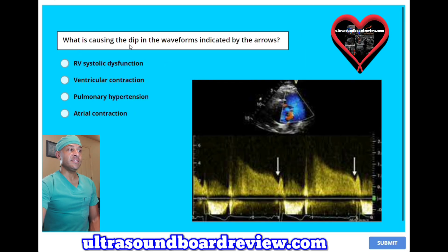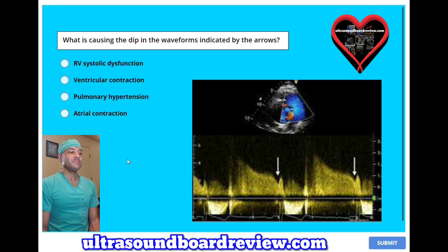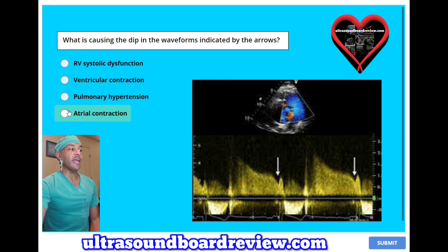What is causing the dip in the waveforms indicated by the arrows? A, RV systolic dysfunction. B, ventricular contraction. C, pulmonary hypertension. Or D, atrial contraction. The answer is D, atrial contraction.